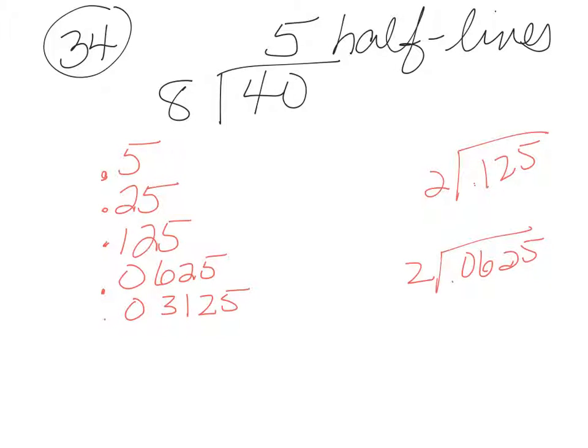Okay, let me count how many half-lives that is. That's 1, 2, 3, 4. Okay, I've got to do one more. So now I've got to do half of 0.03125, and that comes out to be 0.0156. And so now we have 1, 2, 3, 4, 5 half-lives.